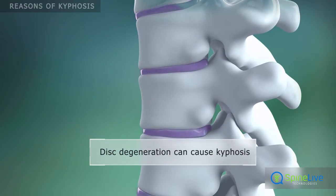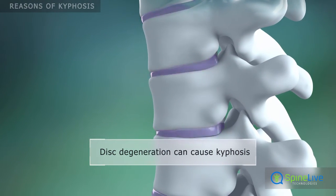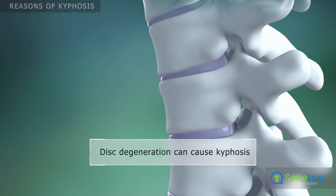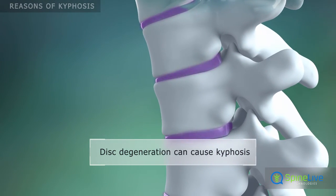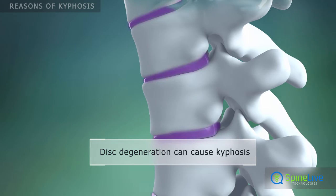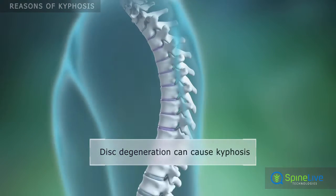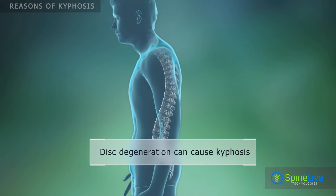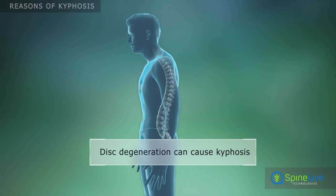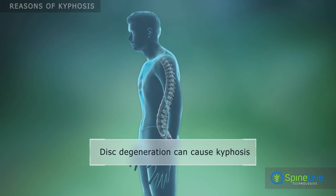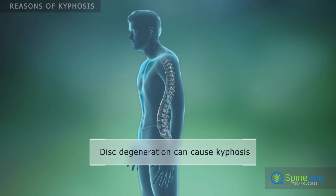The intervertebral discs, found between the vertebrae, act like shock absorbers. Disc degeneration due to aging can cause kyphosis, as the discs dry out and shrink.